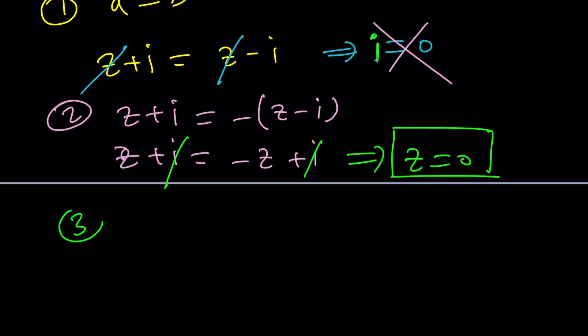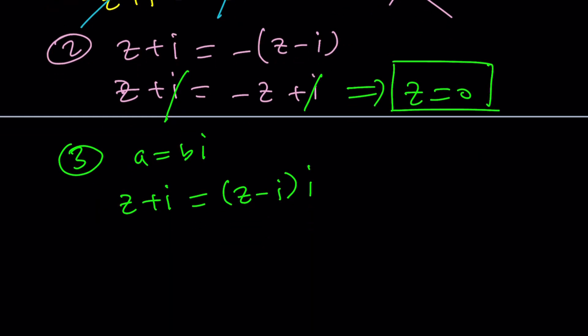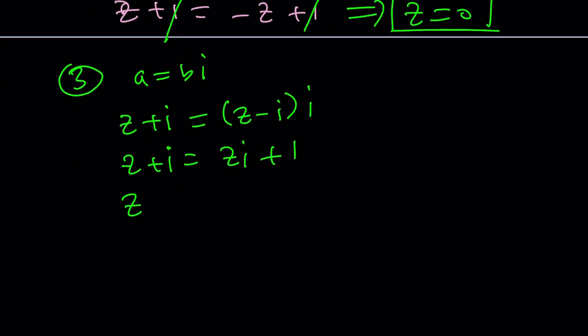And you'll notice if you replace Z with zero, it's going to satisfy the equation. So Z equals zero is good. It works. Case number three. What was that? A equals B I. So I'm going to write it as Z plus I equals Z minus I all multiplied by I. This is going to give me Z plus I equals ZI minus I squared, which is plus one. I squared is negative one. Don't ever forget that.